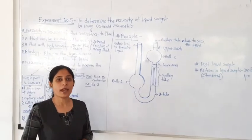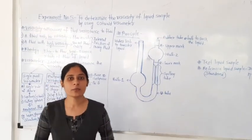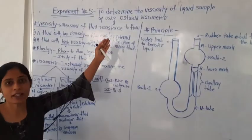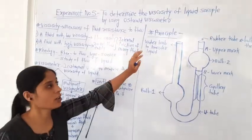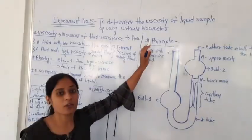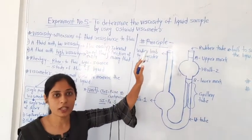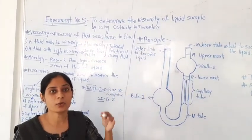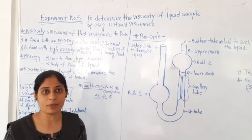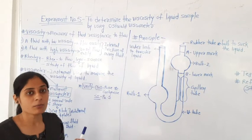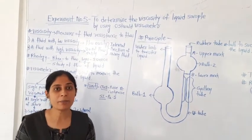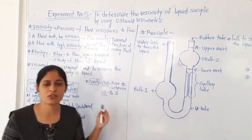Hi everyone, today I am going to perform experiment number 5, that is to determine the viscosity of a liquid sample by using the Ostwald viscometer. So here we have to determine the viscosity of a liquid sample. Before we perform the experiment, we have to describe the basic introduction of viscosity.